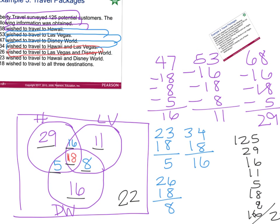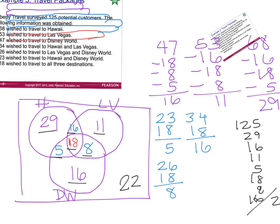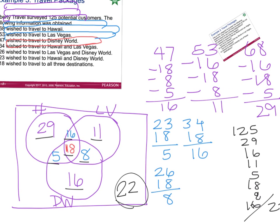The first question: how many of the people surveyed did not want to go to any of the destinations? There are 22 people that did not want to go to any of the destinations. Question two: how many wished to travel only to Hawaii? There were 29 people that wanted Hawaii only. Question three: how many wished to travel to Disney and Vegas but not Hawaii? That would be 8 people.